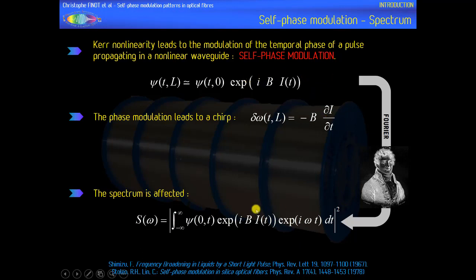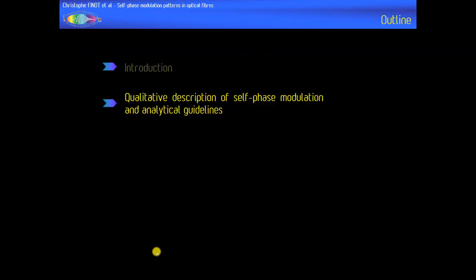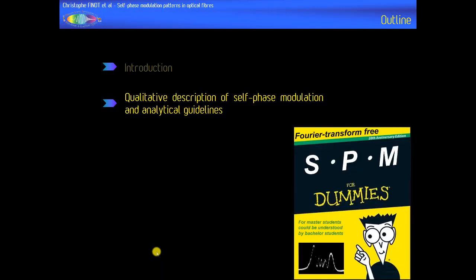However, this Fourier transform process does not completely or easily explain the features that are observed. What we will try to explain more physically is why, when we record the spectrum of a pulse affected by self-phase modulation, we observe very strong oscillations that appear in the extended spectrum — with wide oscillations and two strong peaks on each side. These results have been recorded more than 40 years ago.